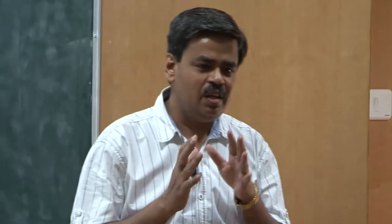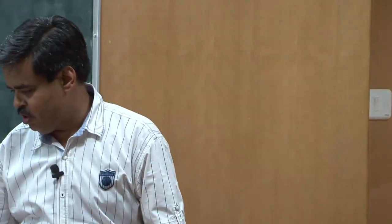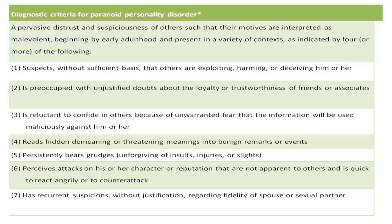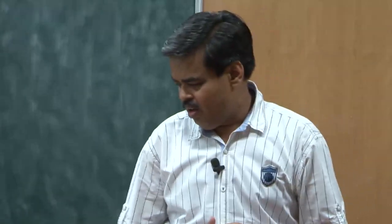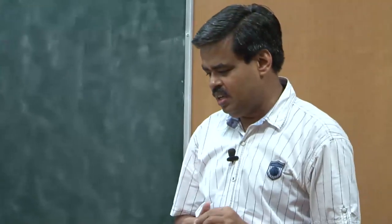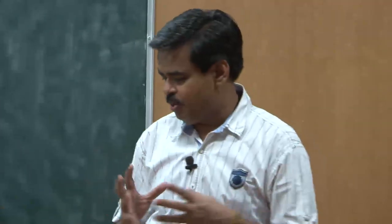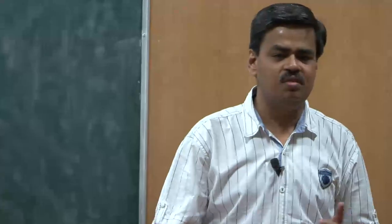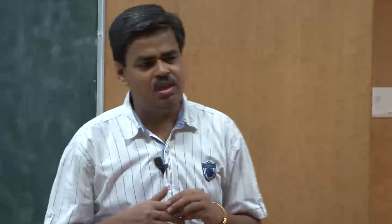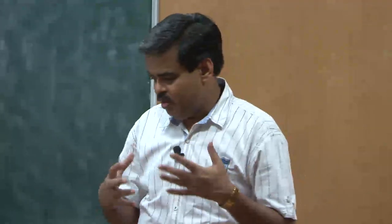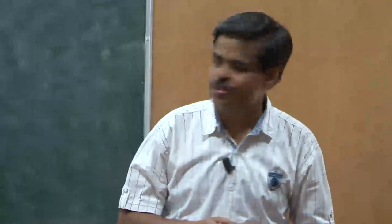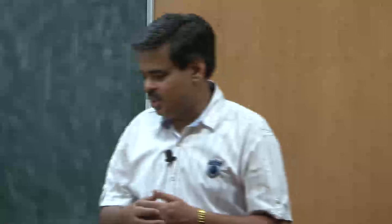We are talking about cluster A disorders, where we had already discussed paranoid personality disorder and schizoid personality disorder. The third personality disorder in cluster A is schizotypical personality disorder, which involves a whole set of inappropriate behaviors inconsistent with subcultural norms. The major features include eccentricity of behavior, a significant deficit in maintaining interpersonal relationships, and the affective response gets adversely affected.